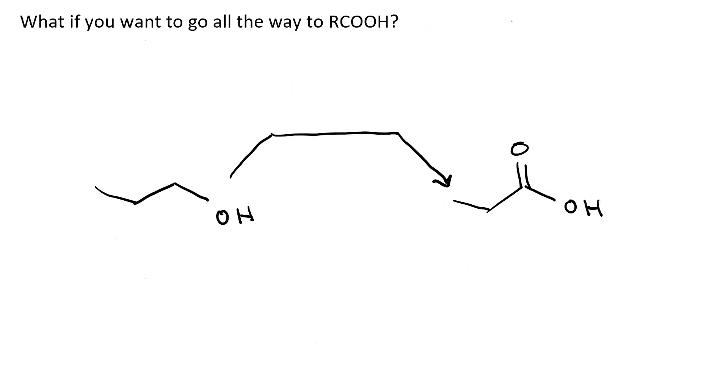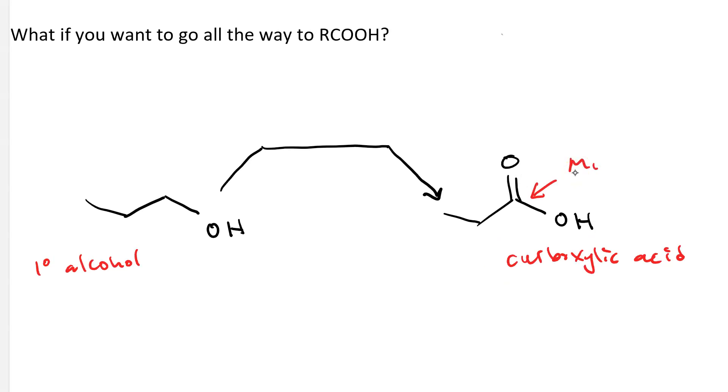If we want an oxidizing agent strong enough to take us from a primary alcohol all the way to a carboxylic acid, a carboxylic acid represents the most oxidized carbonyl carbon. So we need our most powerful oxidizing agent, which is Jones reagent, H2CrO4.